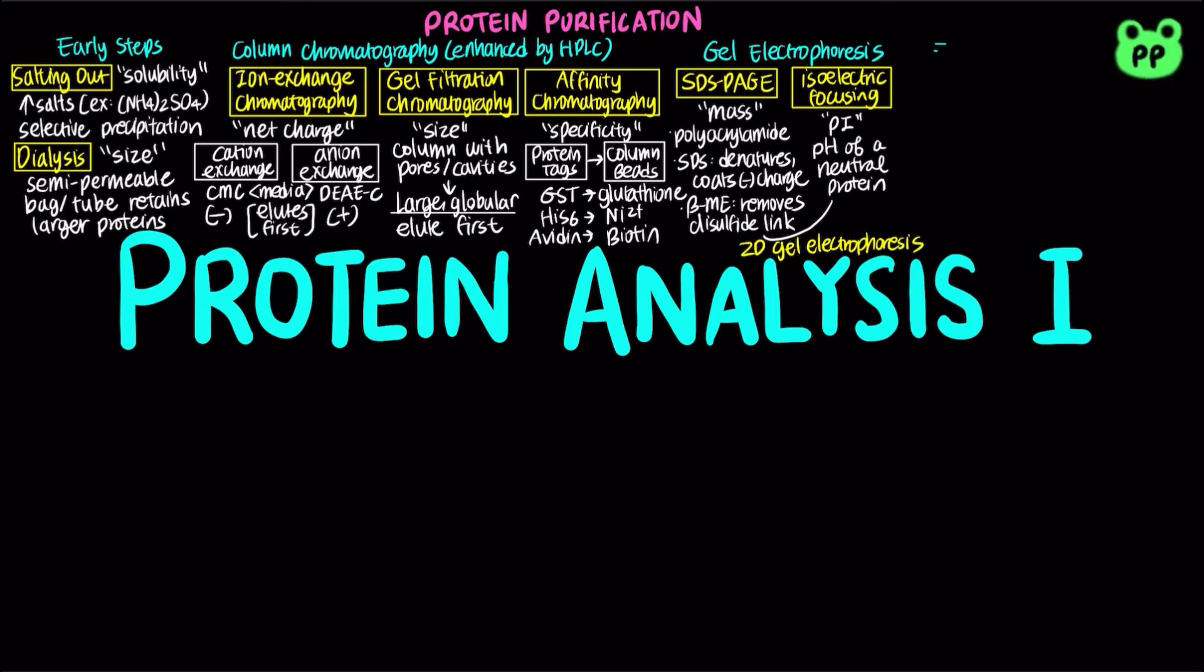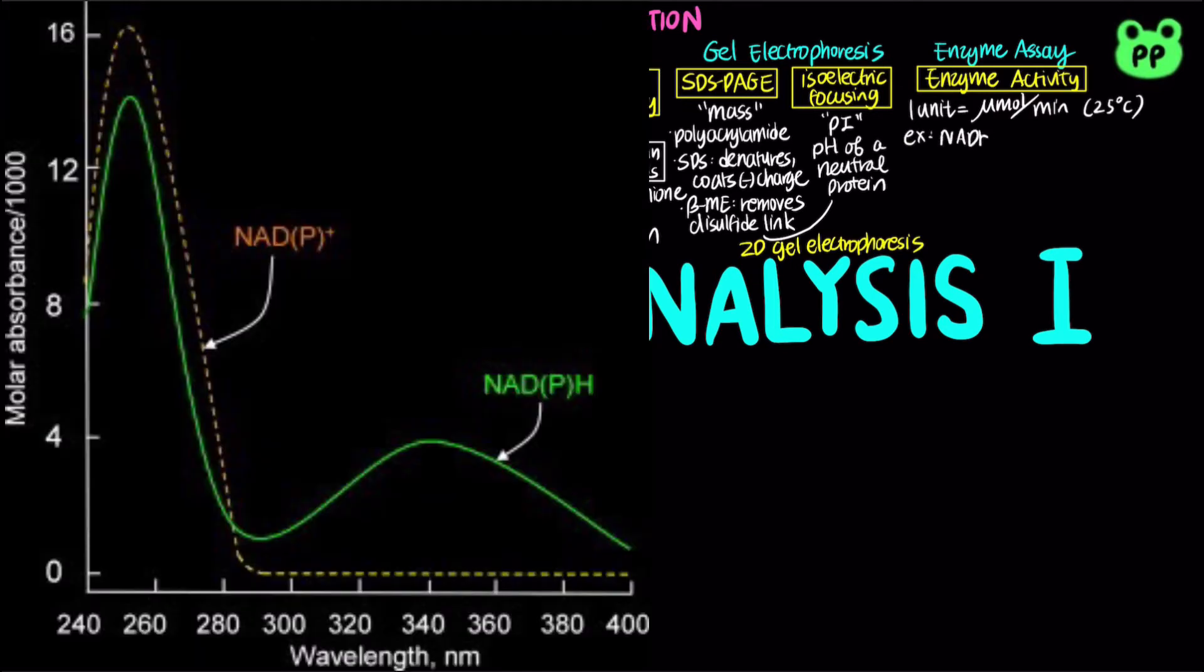At each stage of the purification process, it is important to quantify the amount of protein present. For proteins that are enzymes, the amount in a given extract can be measured or assayed in terms of the catalytic effect the enzyme produces. After each purification step, enzyme activity is assayed. One unit of enzyme activity is defined as the amount of enzyme causing transformation of one micromole of substrate to product per minute at 25 degrees Celsius under optimal conditions of measurement. An example of enzyme activity is the NADH and NADPH concentration measured by a spectrophotometer set at 340 nm, which can be used to measure enzyme activity of dehydrogenases.